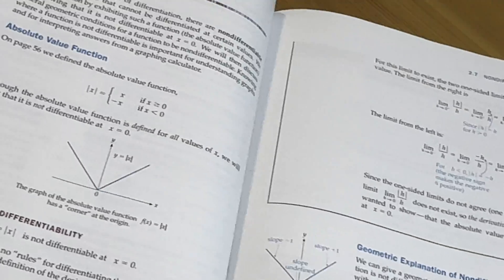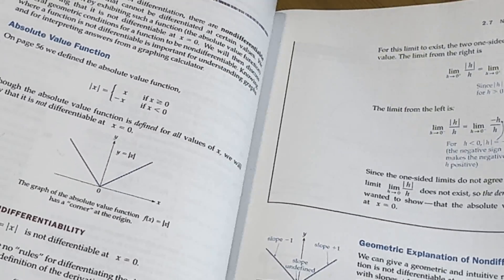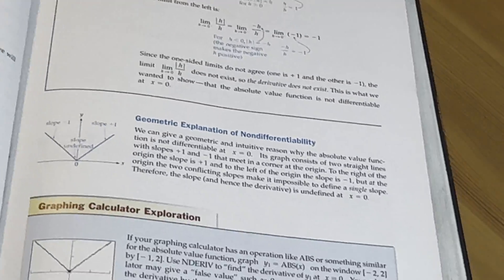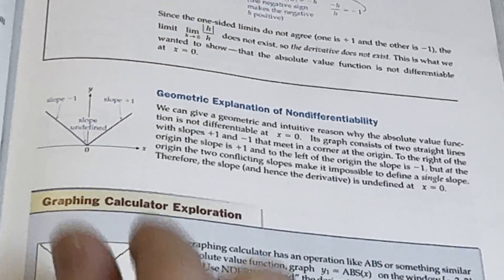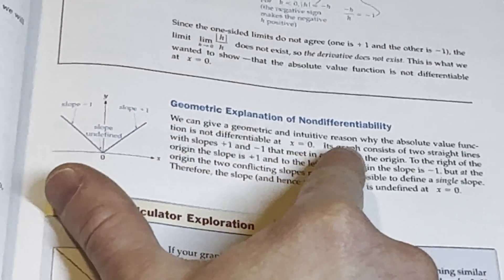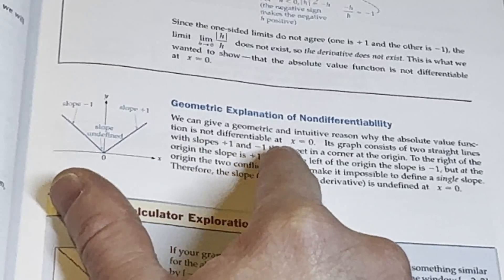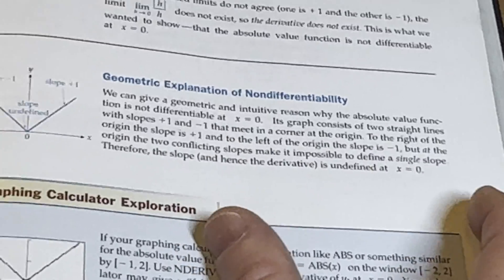So yeah, here it talks about, let's read what it says here. We can give a geometric and intuitive reason why the absolute value function is not differentiable at x equals 0. This is what I was saying. Cool.